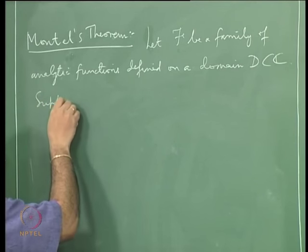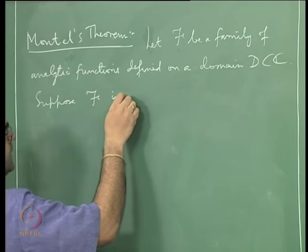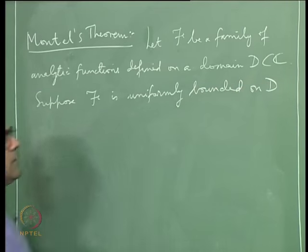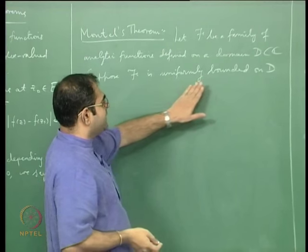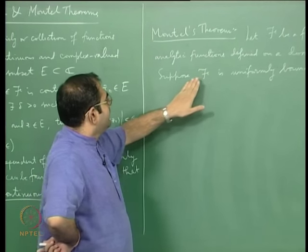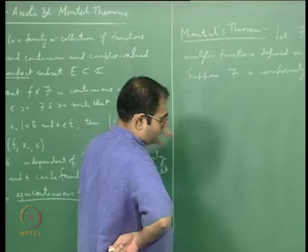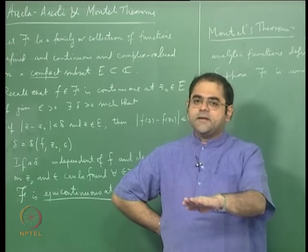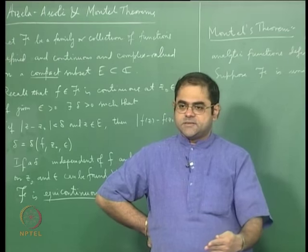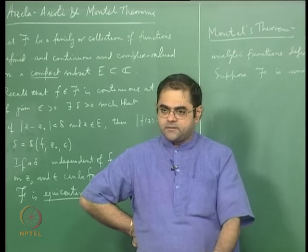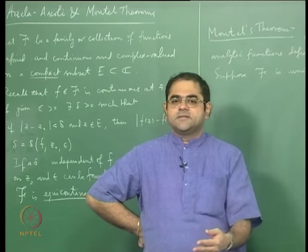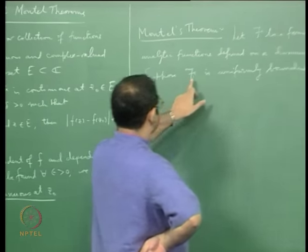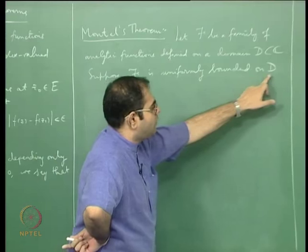Suppose script-F is uniformly bounded on D. But here is the thing — I impulsively wrote down something that is too much to expect. When you do the Arzelà-Ascoli theorem you say you have a family of functions defined on a compact set and it is uniformly bounded on the compact set. But to expect a family of analytic functions to be uniformly bounded on a whole domain is too much.